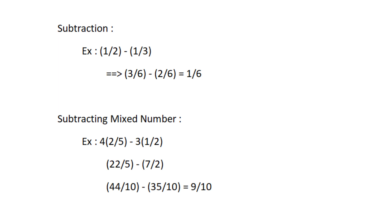Now let's find the subtraction of two fractions. For example, 1/2 minus 1/3. First, find the LCM of 2 and 3, which is 6. Then find the equivalent fractions with denominator 6. Multiply 1/2 by 3/3 to get 3/6, and multiply 1/3 by 2/2 to get 2/6. The denominators are the same, so subtract 3/6 minus 2/6 to get the answer 1/6.